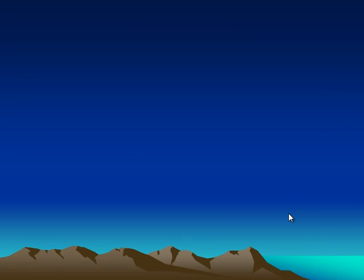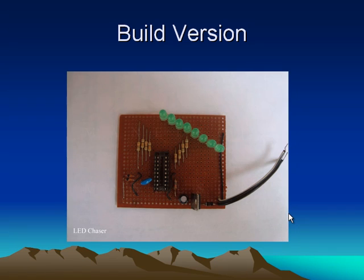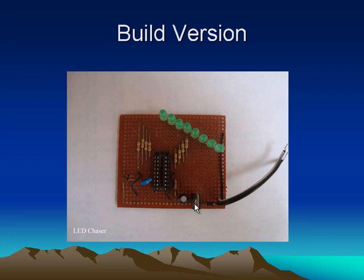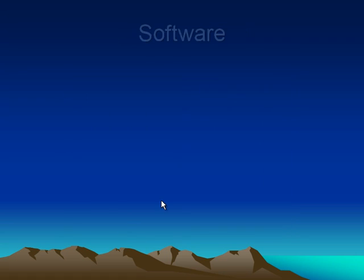Here you can see a built version of this circuit, built on a breadboard. You can see there are eight green LEDs connected to the microcontroller through resistors. This is the IC base — the microcontroller is not yet connected. This blue small component is the crystal oscillator. I also used a voltage regulator to regulate the voltage to a smooth DC five volts, which is required for correct microcontroller operation.